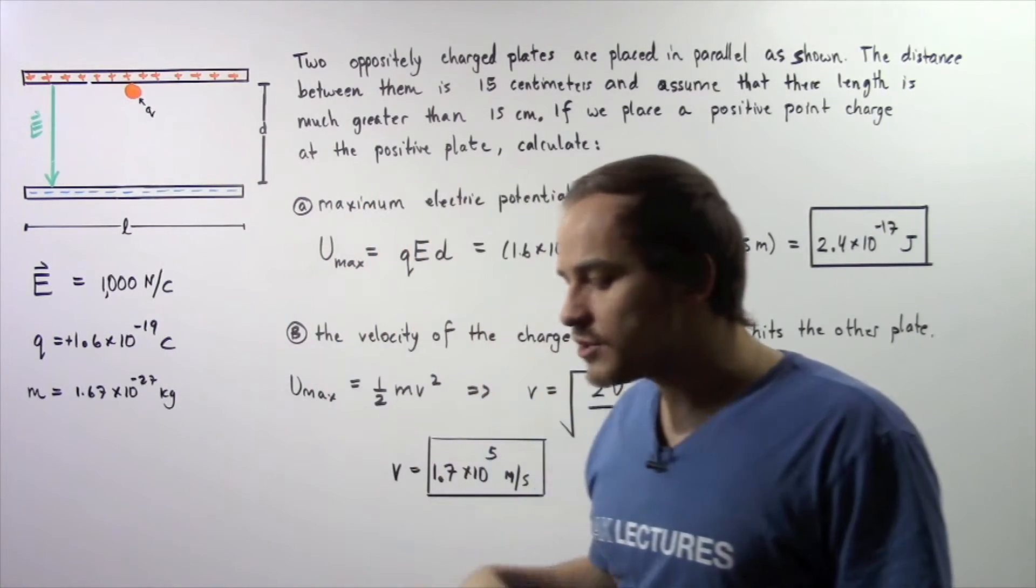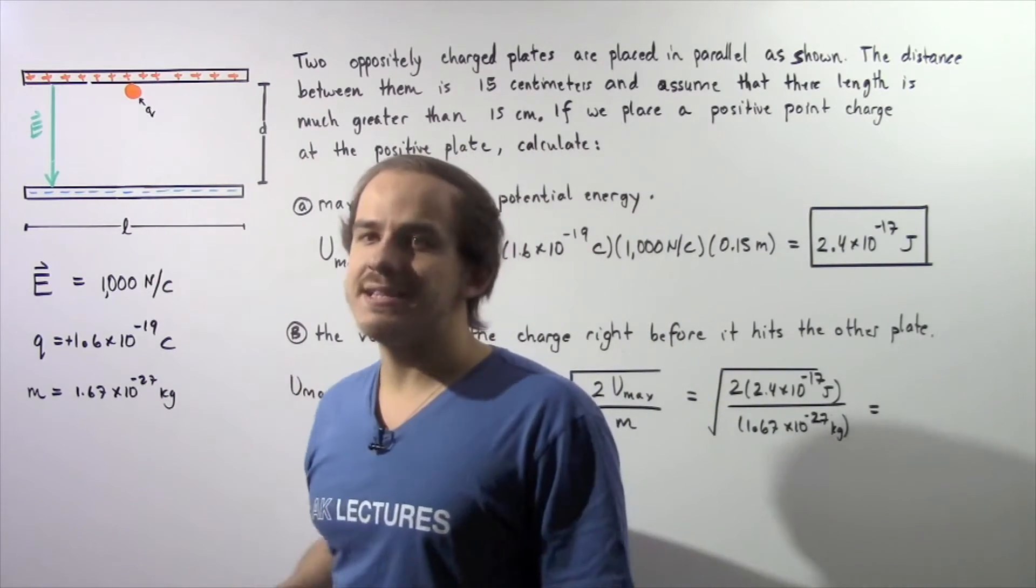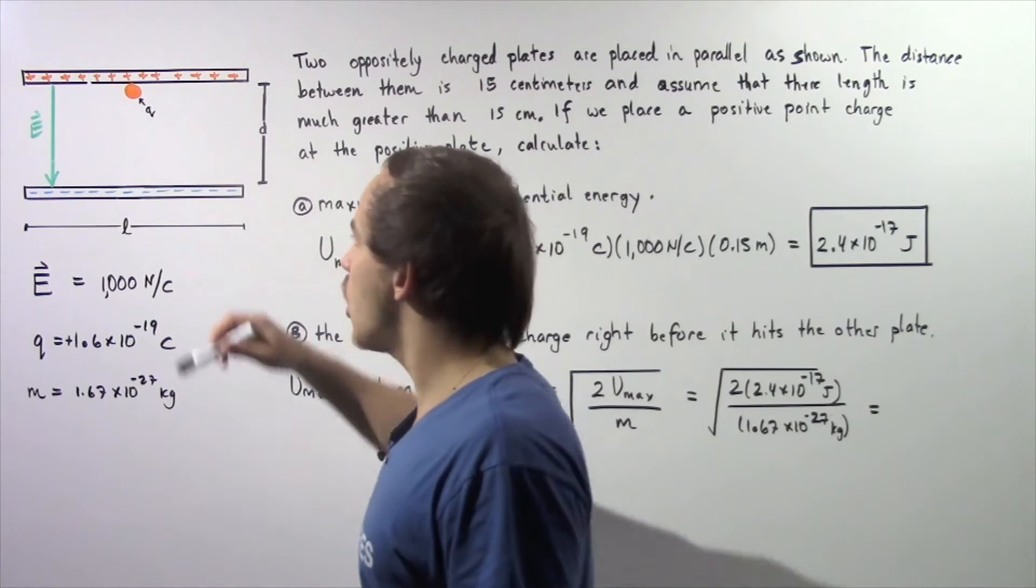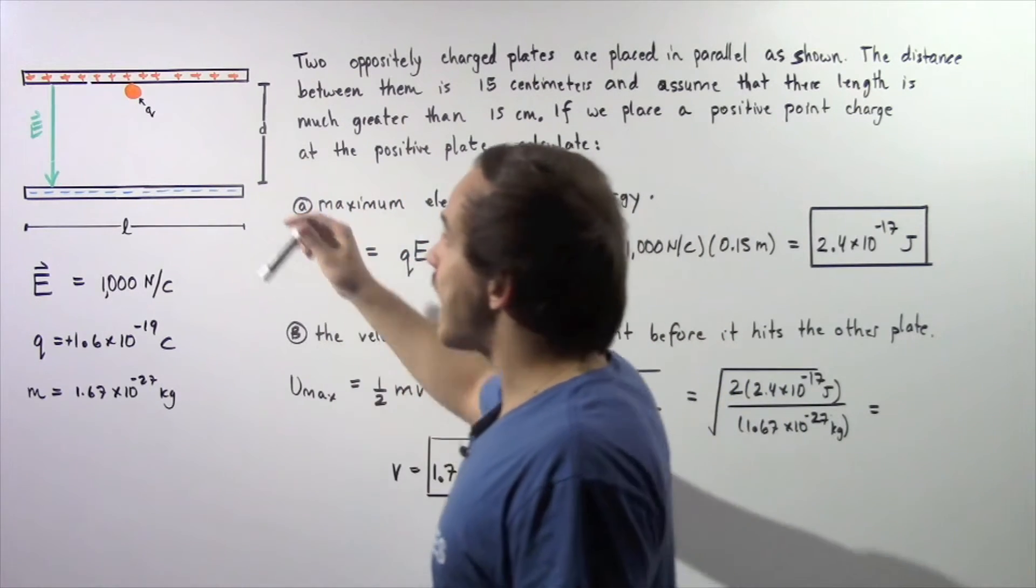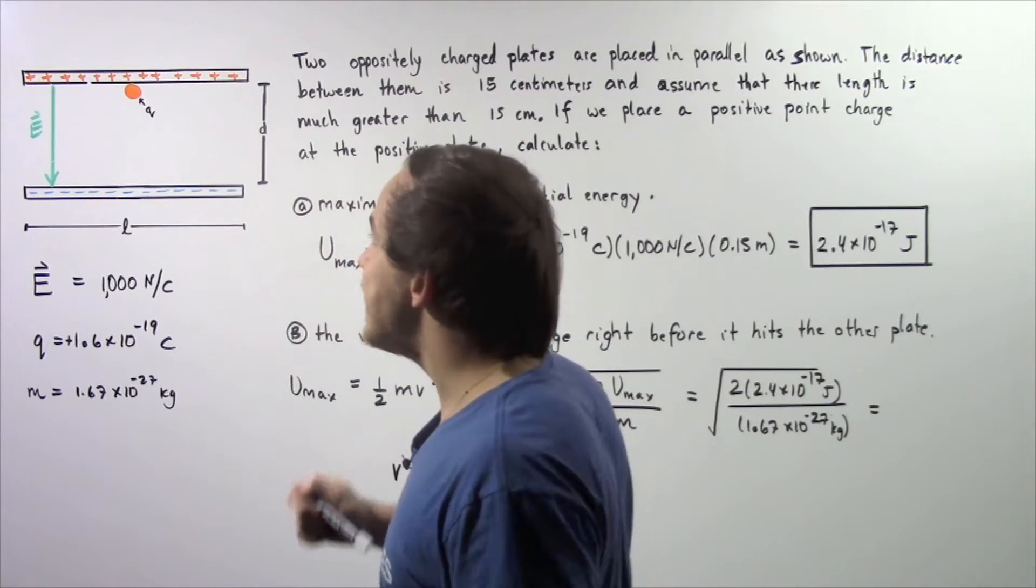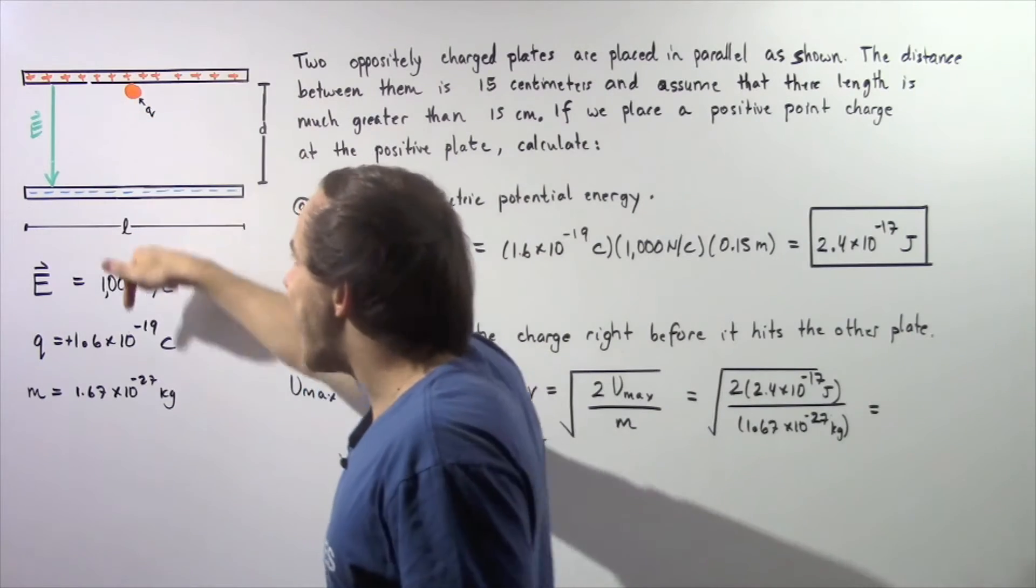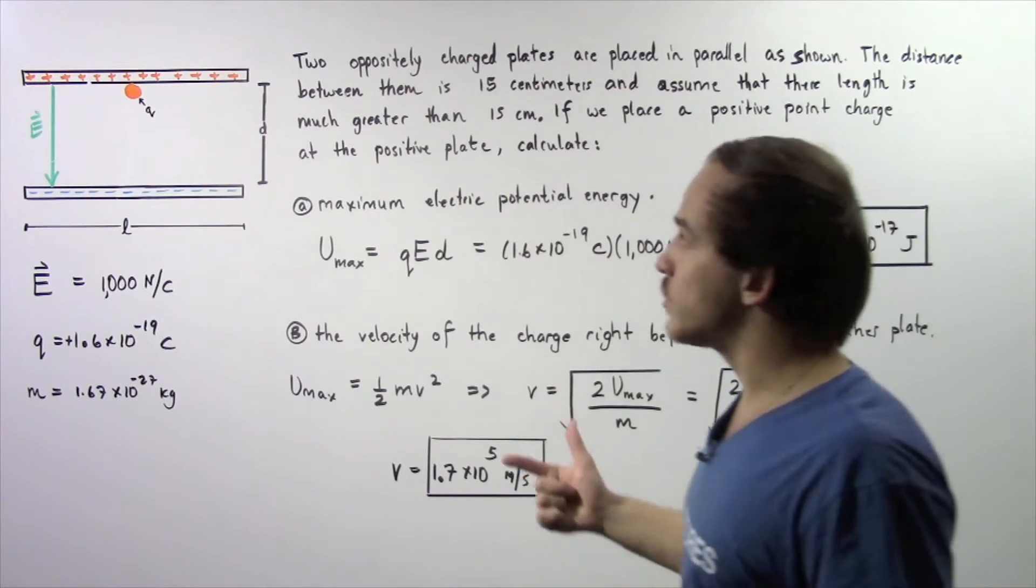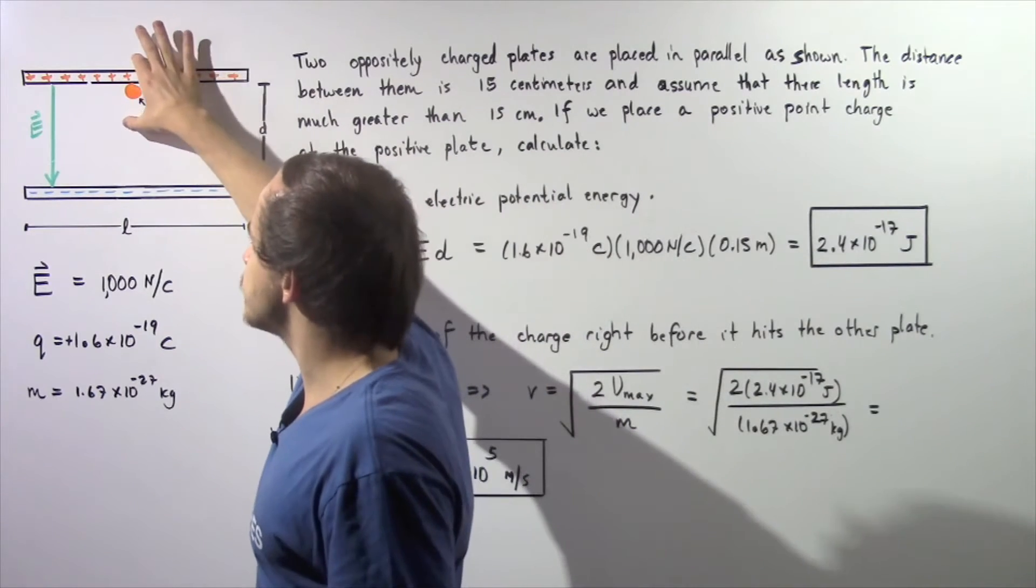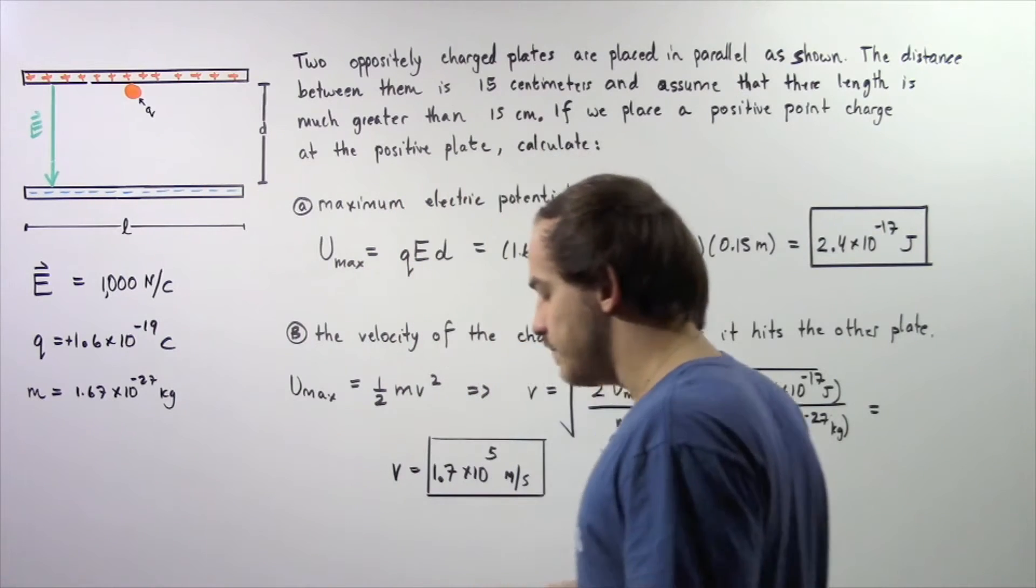The electric field lines will begin on our positive plate and will end on the negative plate as shown by the following green vector. Because our charge is a positive charge, it will begin moving from this position directly downward along our electric field vector. It will travel from this position, let's call that position A, to this position, let's call that position B.